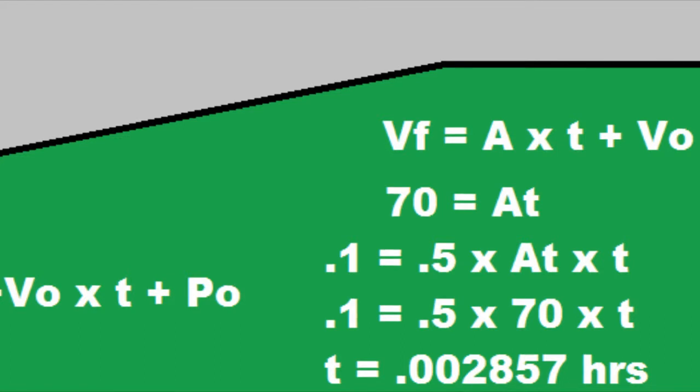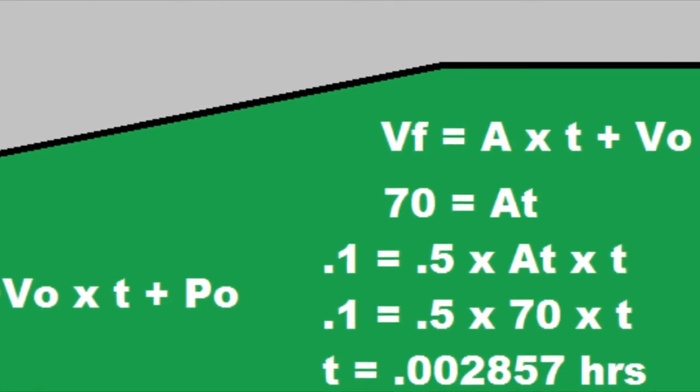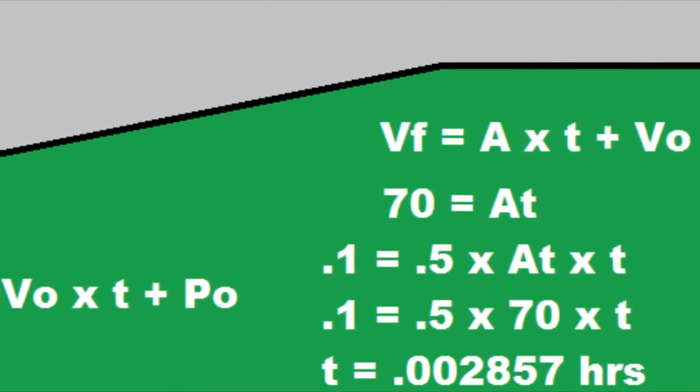So now if we expand the first equation to be 0.1 equals 0.5 times acceleration times time times time, we can replace AT with 70. So after you do some basic algebra, you get 0.002857 hours as the time.